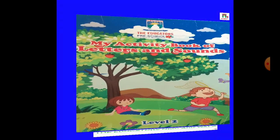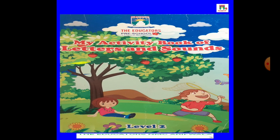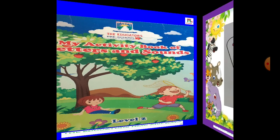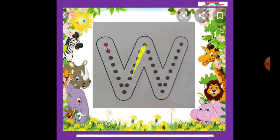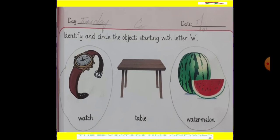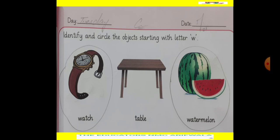This is our Activity Book. Letters and Sounds. And this is our topic Letter W. First we will write here Day, Date and write here Classwork. Identify and circle the objects starting with Letter W. You guys have to identify which object starts with Letter W. Then we have to circle that object.